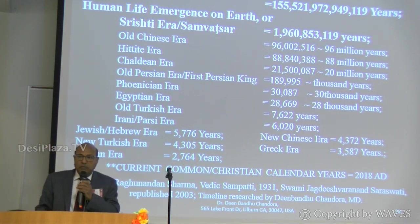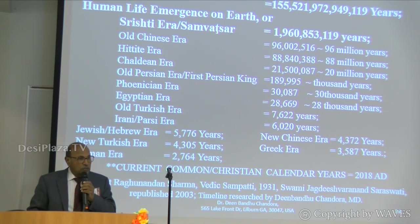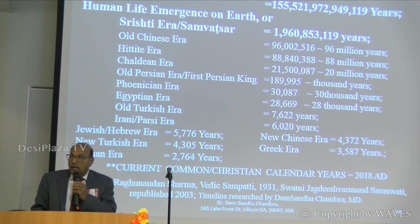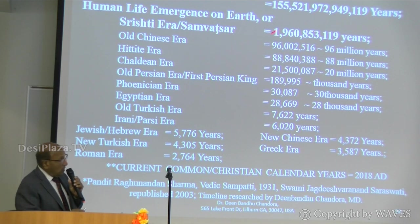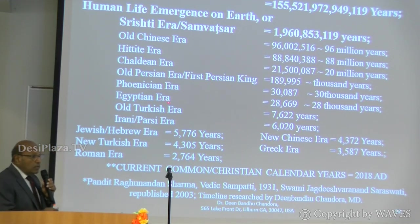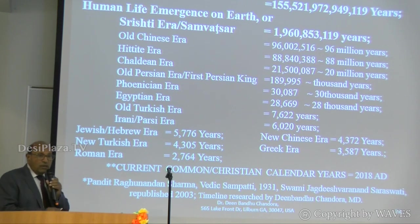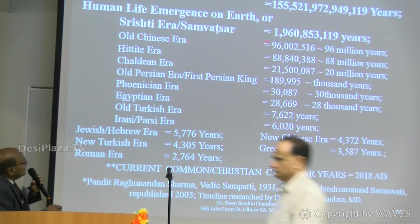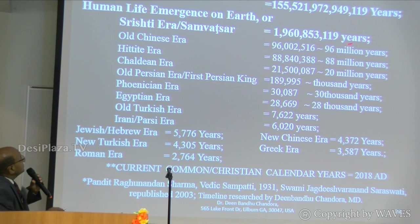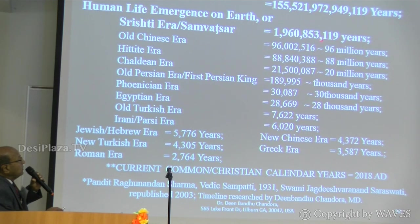As an analogy: if someone is charged with theft, the judge needs evidence — a witness to prove or disprove. The purpose of presenting these other eras is to show that we are not alone in quoting long timescales. Our Srishti era is currently 1.96 billion years running, and calculated up to Kali Yuga it becomes 119.